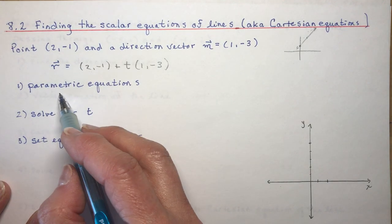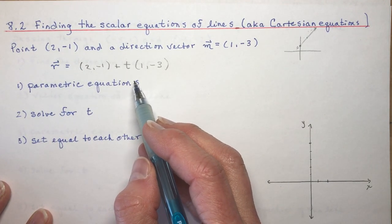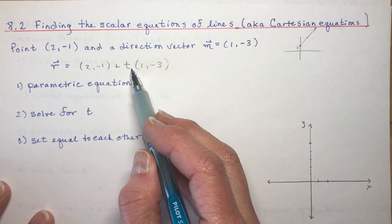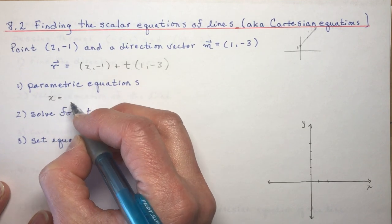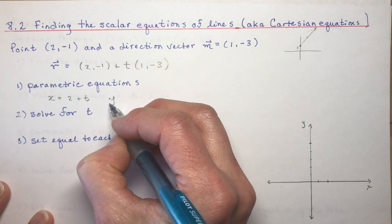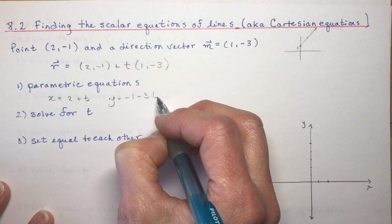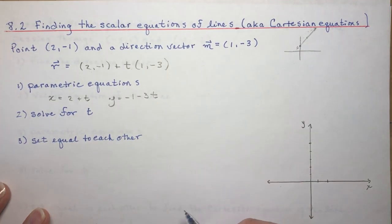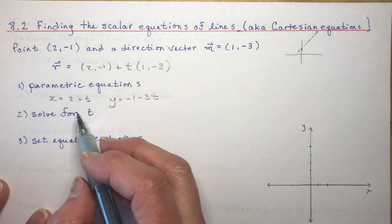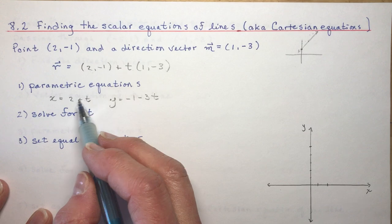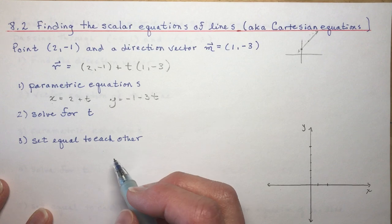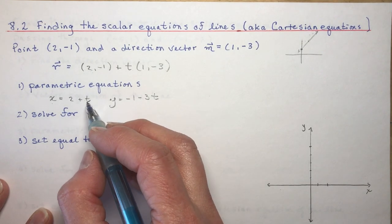Parametric equations represent x and y in terms of the parameter t. My x parametric equation would be x equals 2 plus t, and y is going to equal minus 1 minus 3t. So far so good. In the next step — what we're doing in today's lesson — we find the Cartesian equation by solving for t in each equation and then setting them equal to each other.